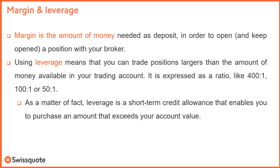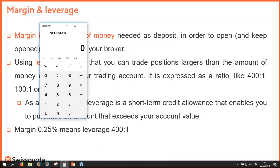Now we speak about leverage. Using leverage means that you can trade positions larger than the amount of money available in your trading account. Usually leverage is expressed as a ratio like 400:1, 100:1, or 50:1. Leverage is a short-term credit allowance that enables you to purchase an amount that exceeds your account value — it is essentially a loan that the broker makes to you. Margin 0.25% means leverage 400. Let's open the calculator and take an example — let's speak about the standard lot on EUR/USD.